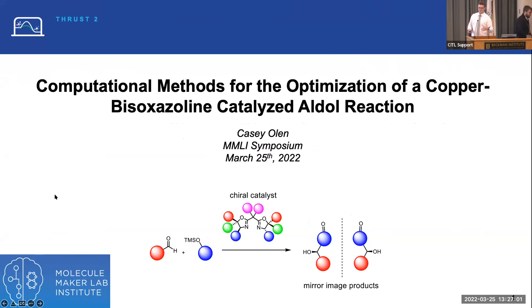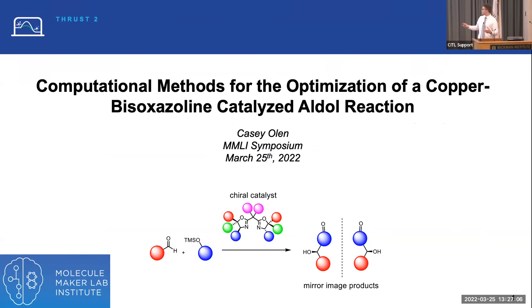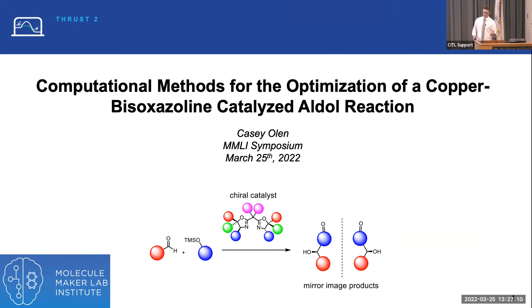We're specifically interested in enantioselective catalysis. For computer science colleagues in the room, we're making products that can be mirror images of each other. Much like how a glove can be biased to your right or left hand, we want to make chiral catalysts that can bias these products to select for one enantiomer over the other.